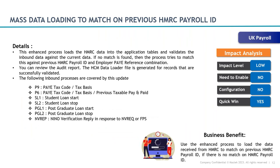The next update is related to UK payroll only: mass data loading to match the previous HMRC Payroll ID. During initial data migration or bulk uploads, if the system cannot find the correct HMRC Payroll ID, it will now look for the previous HMRC Payroll ID. If a match is found — either current or previous — it will load the data accordingly. Common errors will be automatically resolved, and Oracle will provide log files showing how many lines were loaded based on the previous HMRC ID, enhancing the data loading experience.